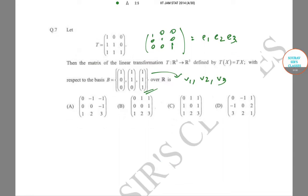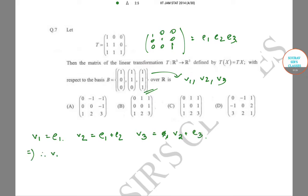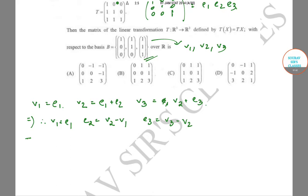We have v1 = e1, v2 = e1 + e2, and v3 = e1 + e2 + e3, which is v2 + e3. Therefore e1 = v1, e2 = v2 − v1, and e3 = v3 − v2.